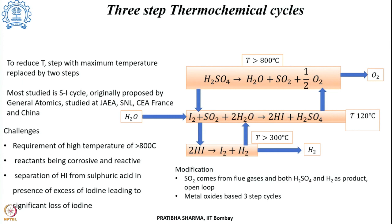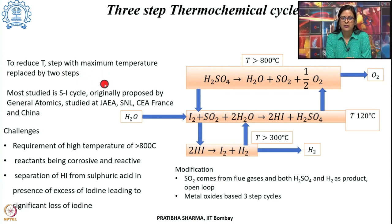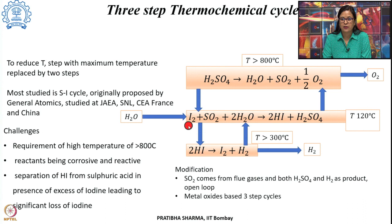The three-step thermochemical cycle was developed to reduce the high maximum temperature of two-step processes. The most studied is the sulfur-iodine (S-I) cycle, proposed by General Atomics and later studied by Japan Atomic Energy Agency, Sandia National Lab, and the Centre for Atomic Energy in France and China. In the first step, iodine, SO₂, and H₂O react to form hydrogen iodide and sulfuric acid at about 120°C. In the second step, sulfuric acid decomposes at above 800°C to produce SO₂, water, and oxygen.